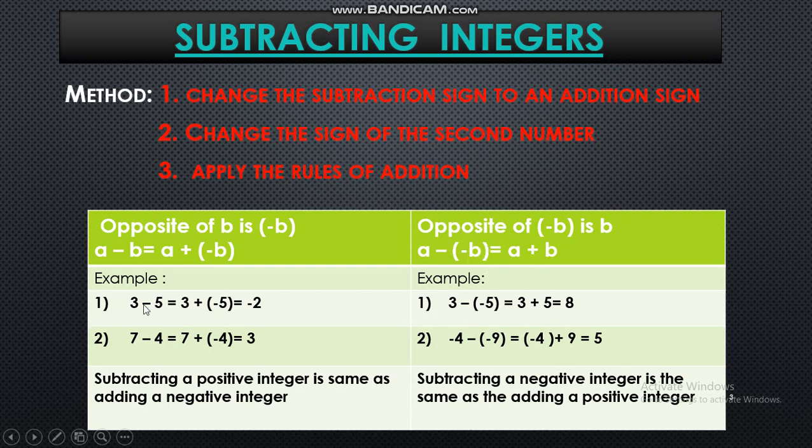So let's have some example. 3 minus 5 means 3 plus minus 5. Now apply the rule of addition since both are of different sign. Do the subtraction 5 minus 3 it's 2 and 5 is bigger so answer is minus 2.